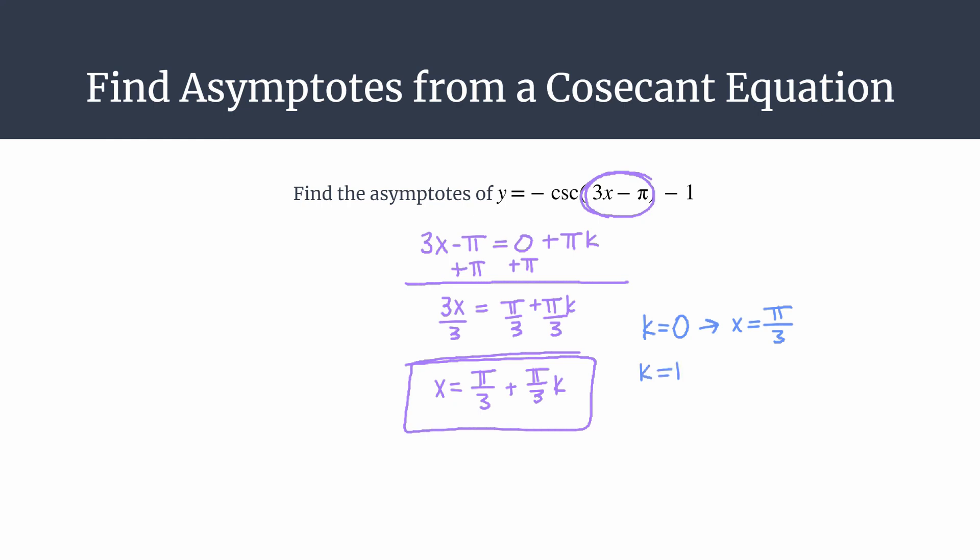If you let k equal 1, you'll get the next asymptote toward the right. You have pi over 3 plus pi over 3, so you have an asymptote at 2 pi over 3.